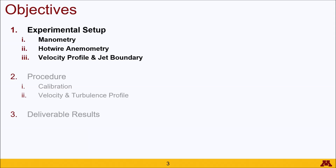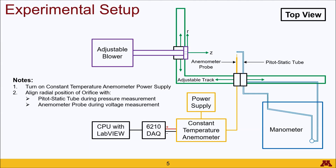So we'll start out with the experimental setup. Here's what you'll see when you get into the lab and here's a top view of your experimental setup. The first thing we have is an adjustable blower which will be producing air velocity for our measurements. This is attached to an adjustable track which can traverse the radial direction, and on the other side of the track we have both an anemometer probe and a pitot-static tube on the same attachment, which will allow you to adjust the axial position of your measurement.